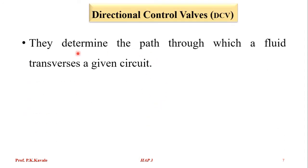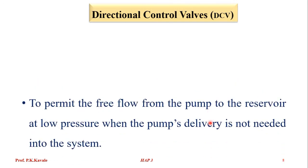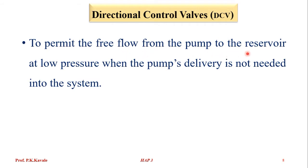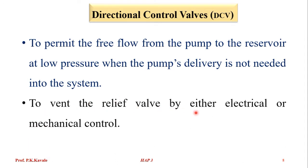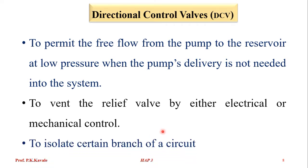The function and purpose of a directional control valve is to determine the path through which a fluid travels in a given circuit — to start, stop, accelerate, decelerate, and change the direction of motion of a hydraulic actuator; to permit free flow from the pump to reservoir at low pressure when the pump's delivery is not needed; to vent the relief valve by either electrical or mechanical control; and to isolate a certain branch of the circuit.